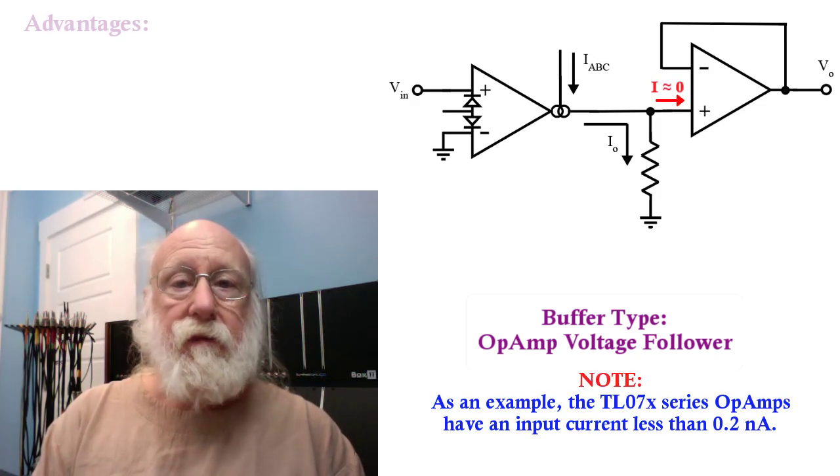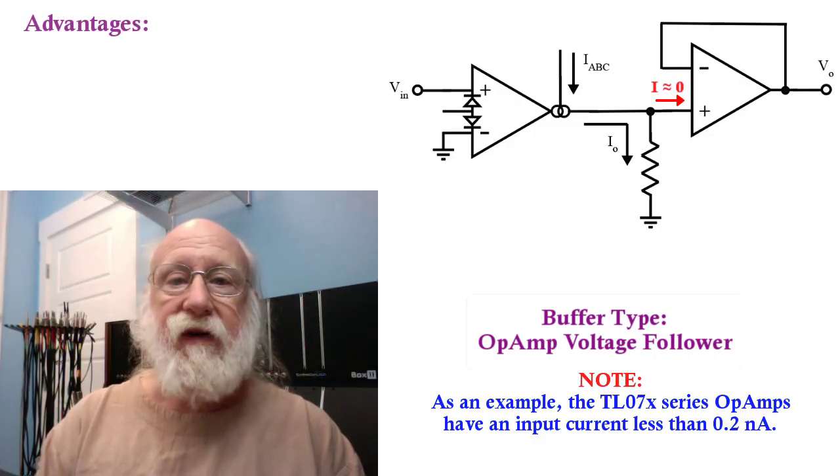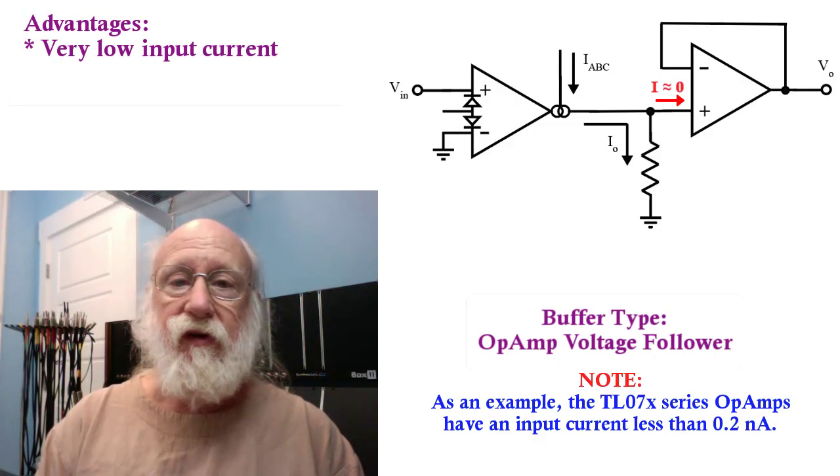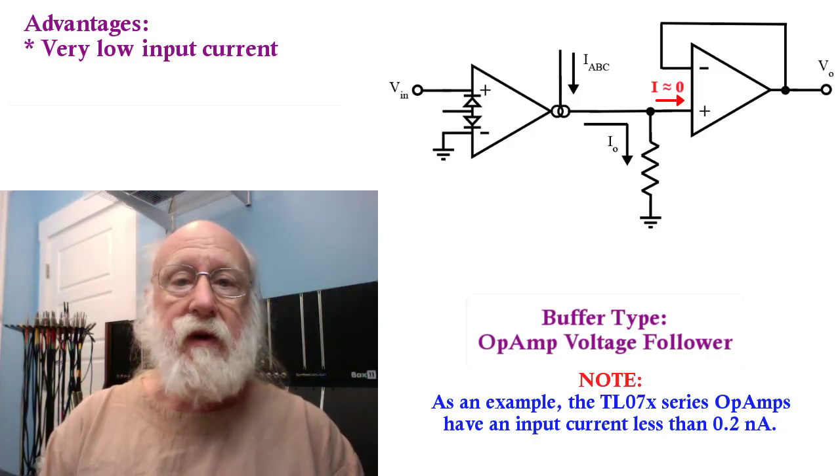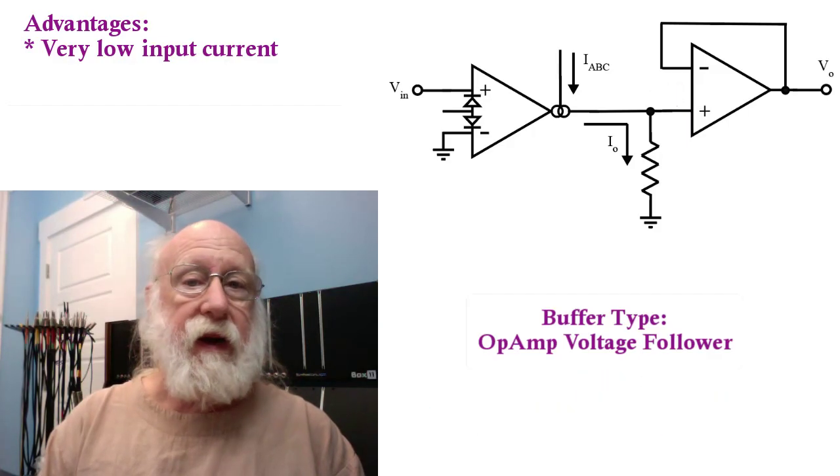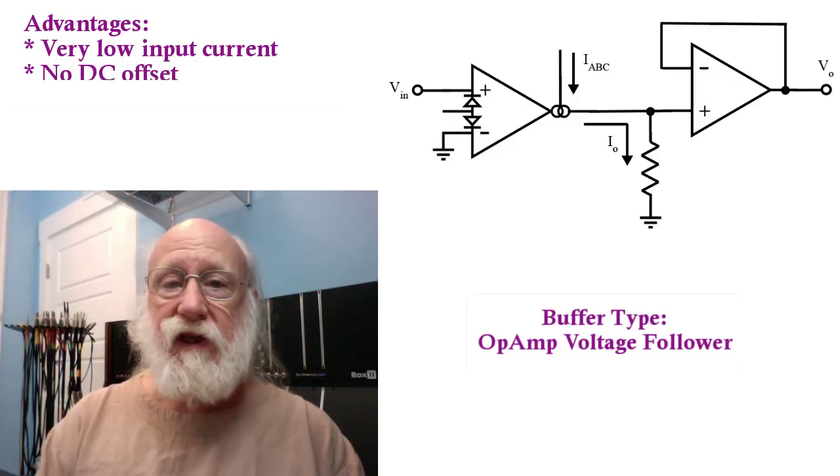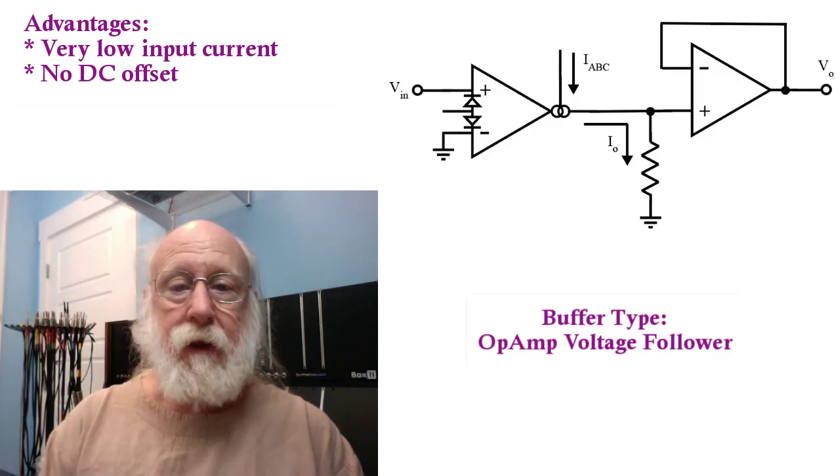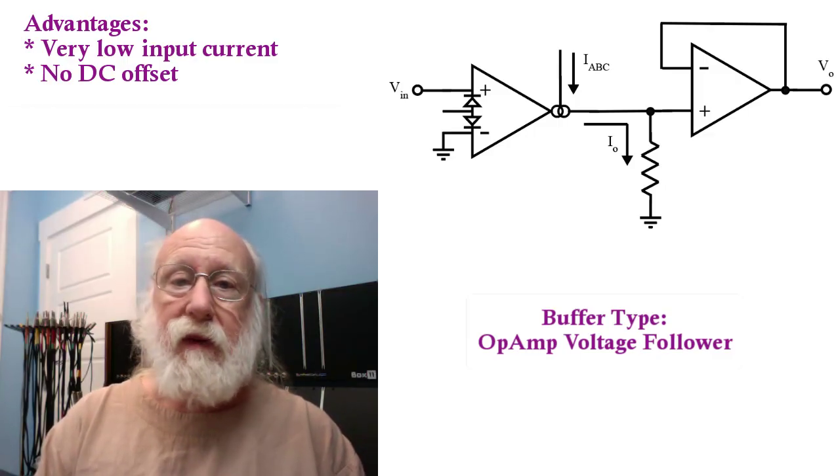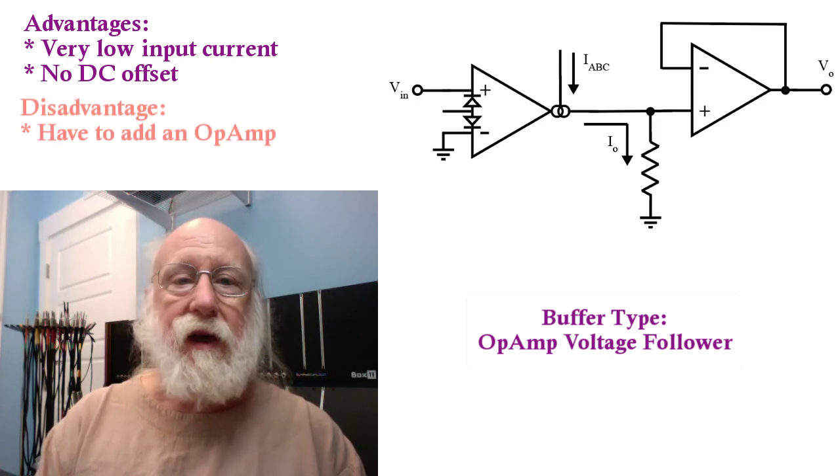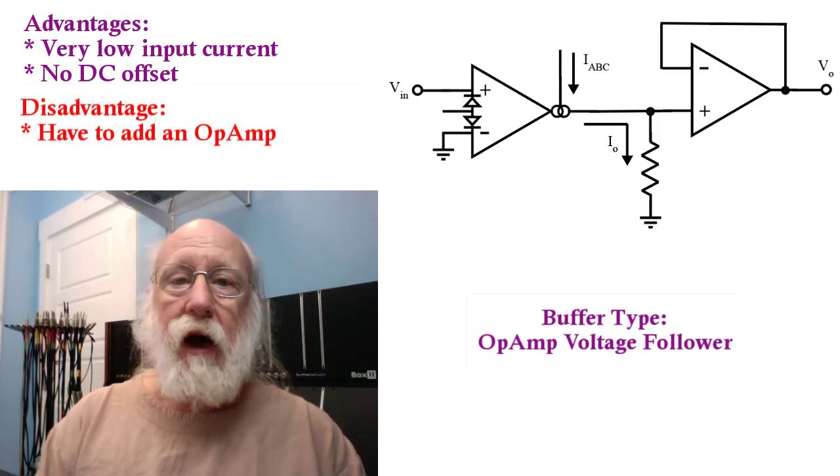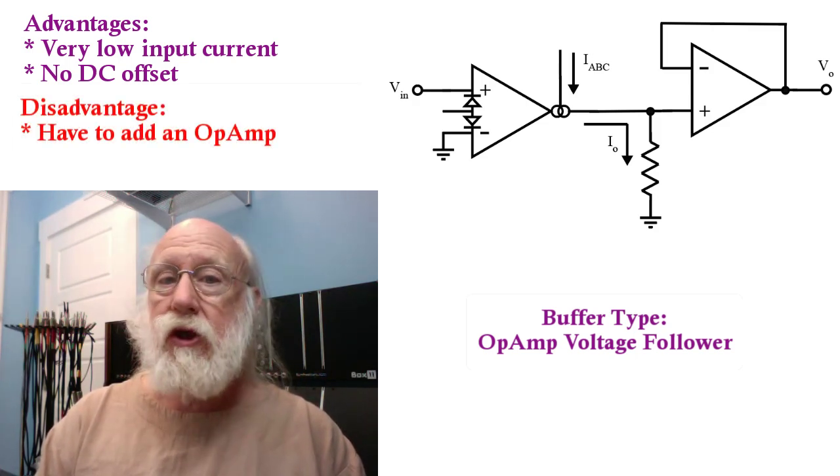The advantages are, first of all, if you're using an FET op amp, it won't steal much current from your conversion resistor. And notably, it does not have the same disadvantage that the Darlington pair and the FET had, which is that it does not add an offset to your output voltage. Depending on the situation, that may be a noticeable advantage. The disadvantage is that it requires an op amp to be added to your circuit.